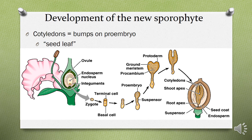The protoderm is the outer layer, just like an epidermis. Pro-cambium is the structure from which the vascular bundle — xylem and phloem — develop later. The structure known as cotyledons consists of a shoot apex from which the shoot arises and a root apex from which the radicle comes out. With the passage of time, a protective coat develops around these structures and the whole structure is converted into a seed.